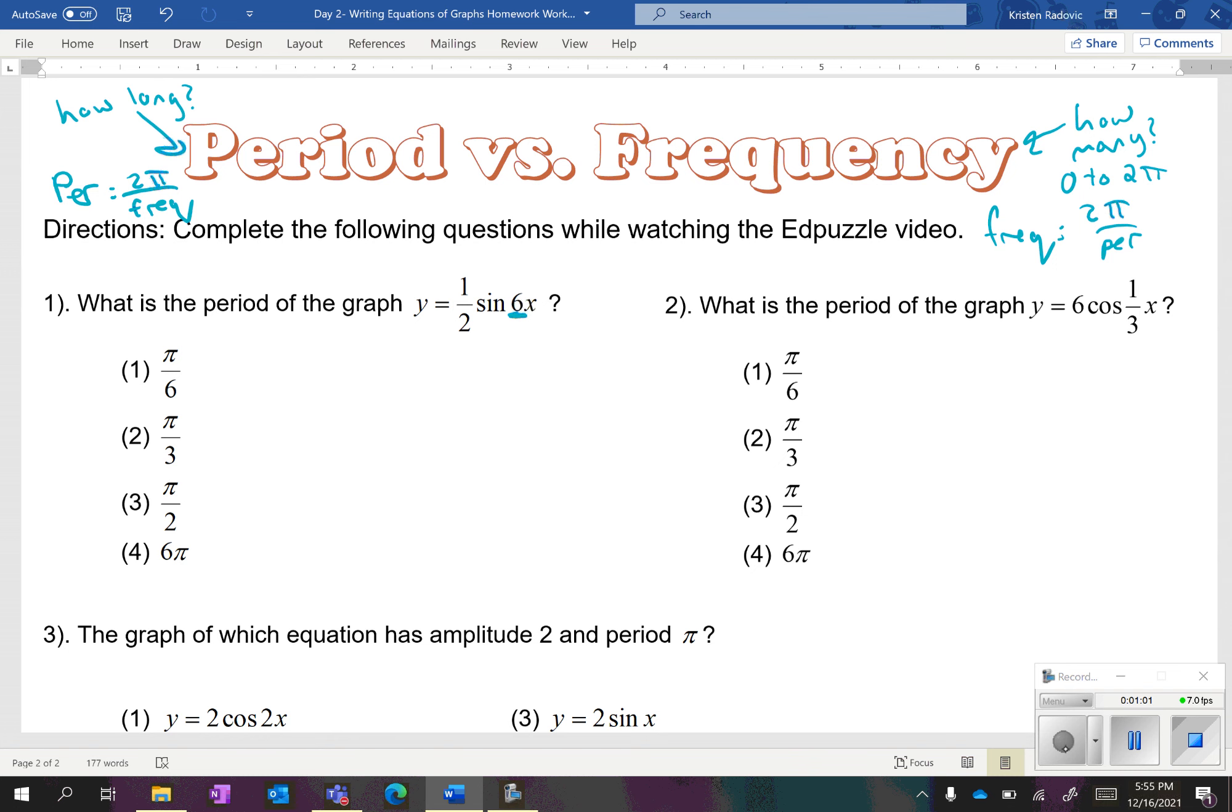So, if they're asking for the period, first you need to find the frequency, because you're given an equation, and the frequency is six. That means your period is going to be two pi over your frequency, which is two pi over six.